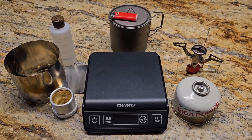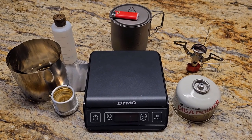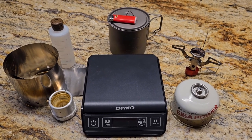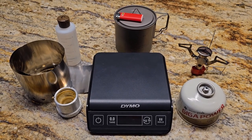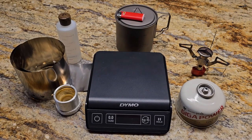There in the center is my Toaks 650 titanium pot as well as a mini Bic lighter. I will be using that also with my new stove setup and it works great.